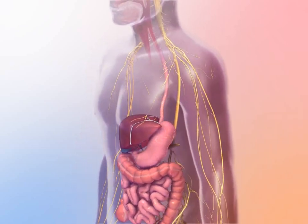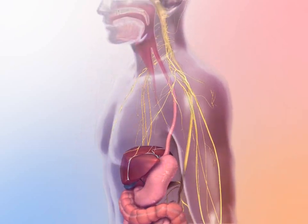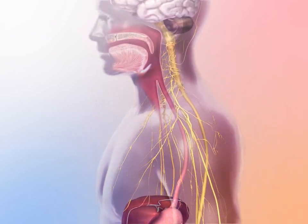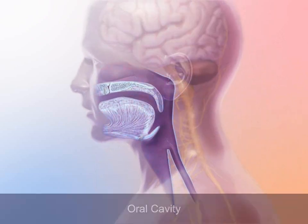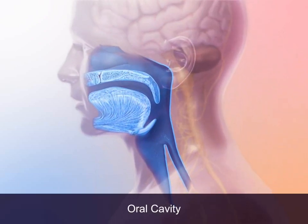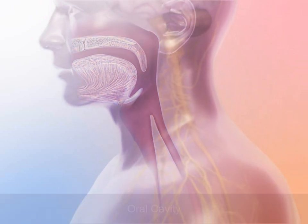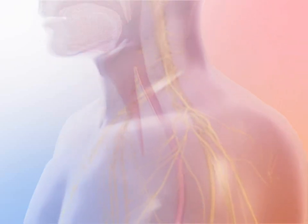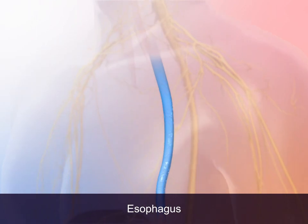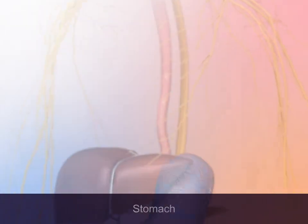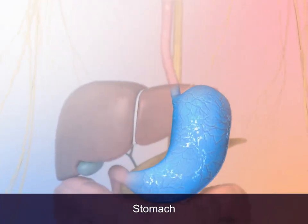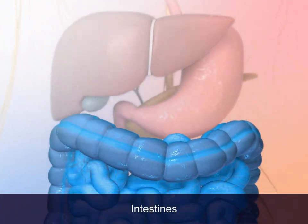The alimentary canal is a single, continuous tube that includes the oral cavity, esophagus, stomach, and intestines.